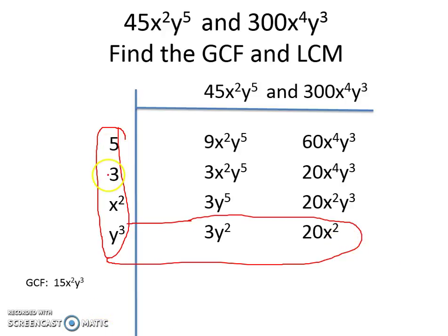So we have to multiply the 5 times the 3 times the 3 times the 20, and then we have to multiply the x² times the x², and the y³ times y². And when you do that, you get 900x⁴y⁵.